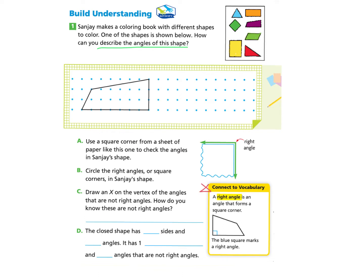We are going to start with the connective vocabulary section. A right angle is an angle that forms a square corner. You'll see here an example of a right angle. When we have a polygon shape like the one Sanjay has drawn, they use a little square — the blue square marks a right angle inside the polygon.